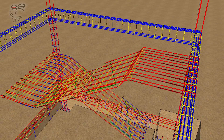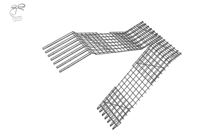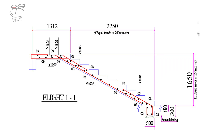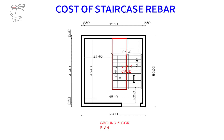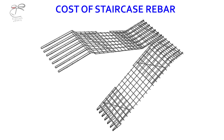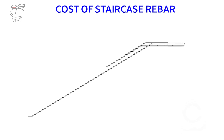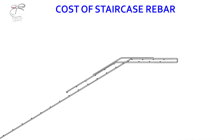For the staircase rebar, we're going to do the main bars and the distribution bars. Firstly, we'll start with the first flight. It looks typical like this — flight one. For flight two, we'll do that separately, and we'll do the intermediate landing as well. A bar bending schedule for the staircase rebar will detail the specific length, type of rebar, and the bending details for the main bars.